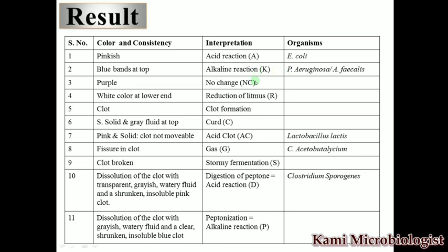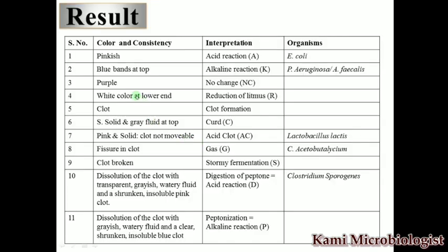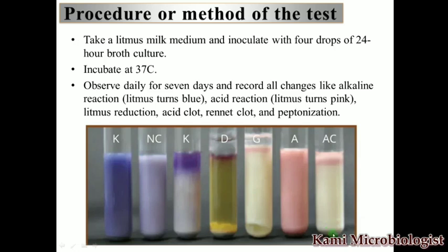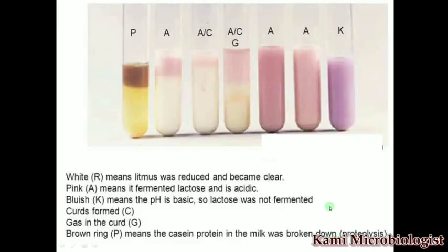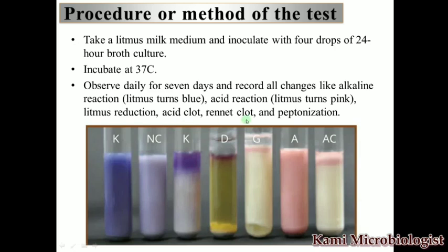White color at the lower end indicates reduction of the litmus. Clot formation is observed when we tilt the tube and the media is not moving. White color at the bottom means litmus reduction. We also observe semi-solid and gray fluid at the top — this is the curd formation.